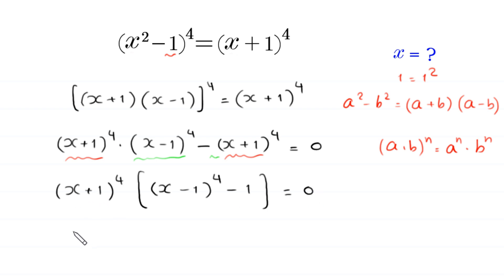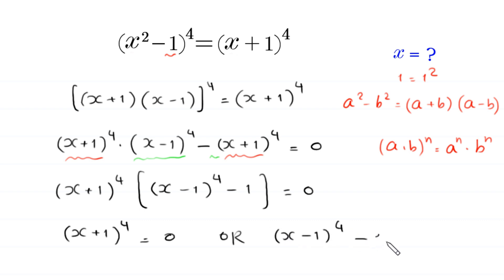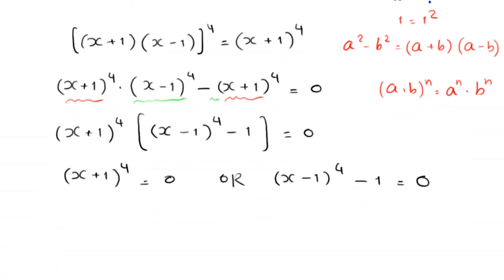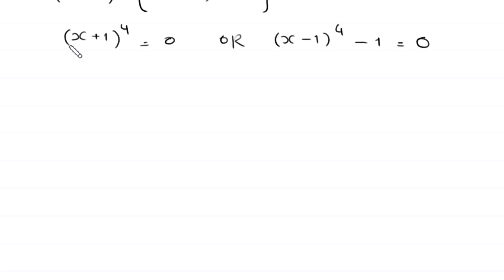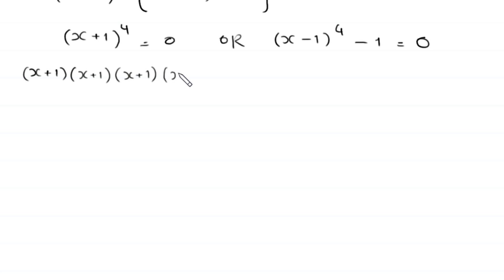From here, either (x + 1)⁴ = 0 or (x - 1)⁴ - 1 = 0. For the first factor, (x + 1)⁴ = 0 means (x+1)(x+1)(x+1)(x+1) = 0, giving us four repeated solutions: x₁ = x₂ = x₃ = x₄ = -1.